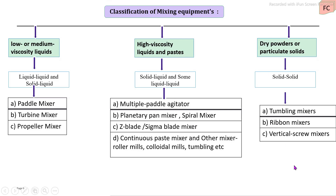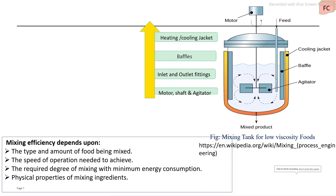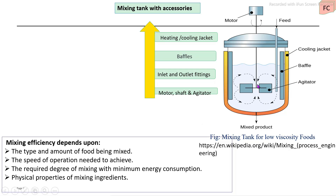For mixing of low or medium viscosity liquids, a mixing tank with several accessories is required. First, an external jacket is provided for heating and cooling purposes. Second, internal baffles are provided to prevent vortex formation. Third, the shaft with the mixing element is located at the center, connected with an electrical motor and gearbox. The tank is also fitted with inlet and outlet pipes.